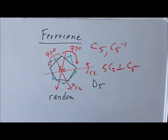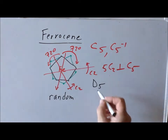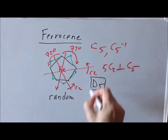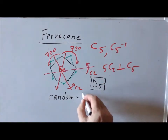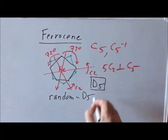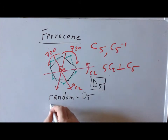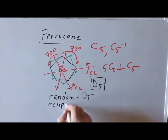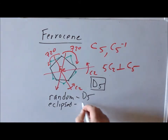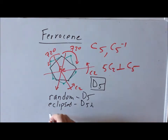Since we don't have a horizontal mirror and we don't have any dihedral mirrors, that means we just have the group D5. So for the random conformation, the point group is D5. For the eclipsed conformation, it's D5h. And for the staggered conformation, it's D5d.